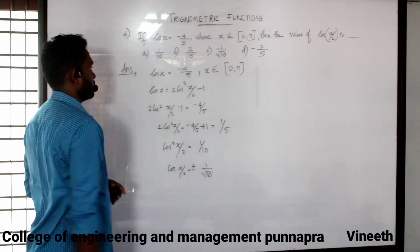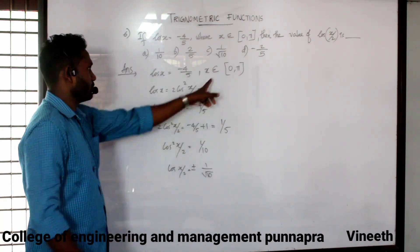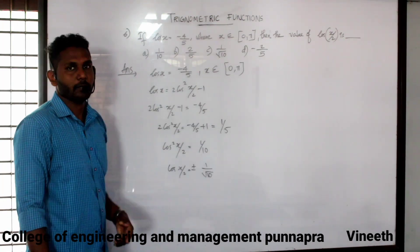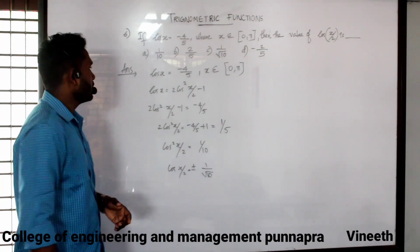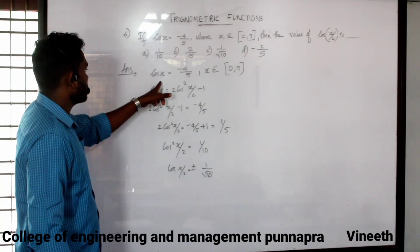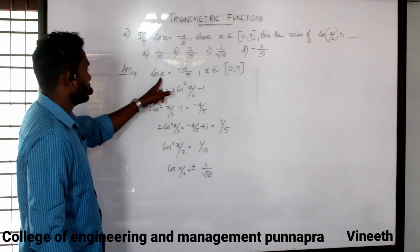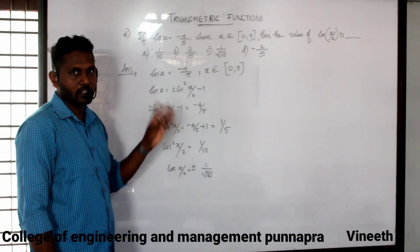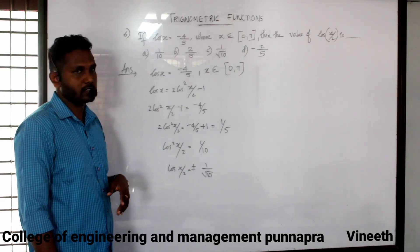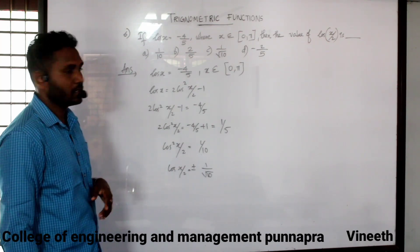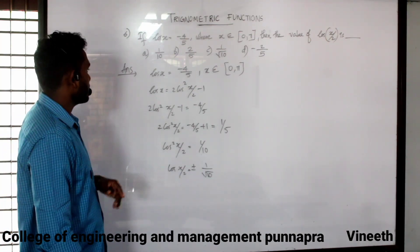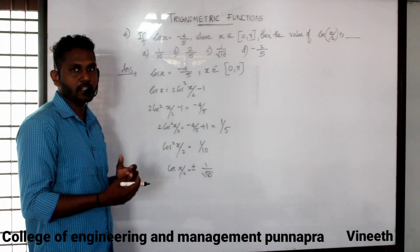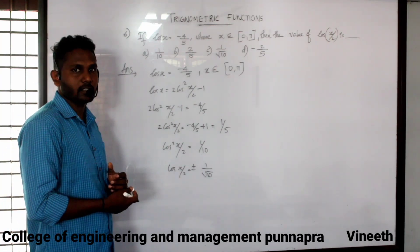Cos x is equal to minus 4 by 5. Using the formula for cos theta, the formula is cos 2theta equals 2 cos squared theta minus 1, so the answer is cos theta plus theta minus 1.